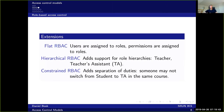There are various extensions to role-based access control. The original paper was published in the mid-90s, and there has been work done on that since then. What we've talked about so far is the so-called flat role-based access control — users are assigned to roles and permissions are assigned to roles, so users get permissions through their different roles. There is also hierarchical role-based access control, which adds support for role hierarchy. For instance, if we have the roles teacher and teacher's assistant, the teacher's assistant's permissions should be a subset of the teacher's permissions — the teacher is allowed to do the same things as the teacher's assistant, but also more.